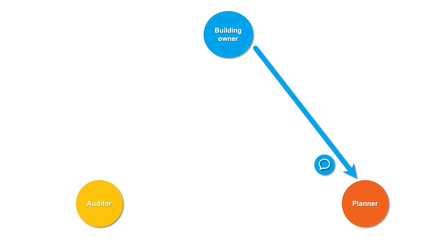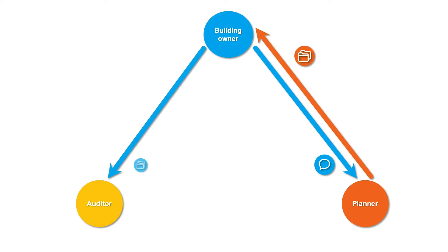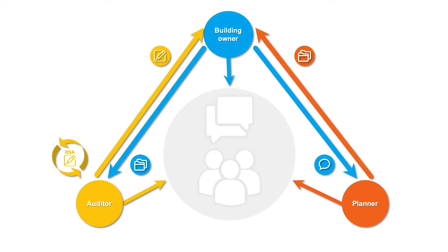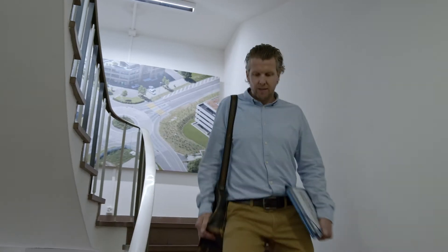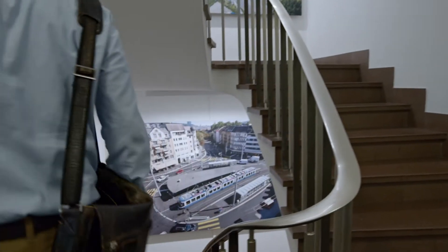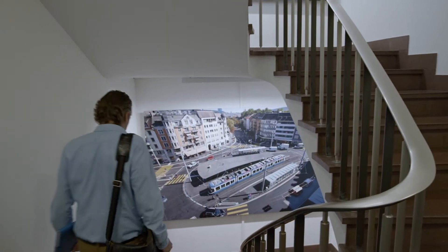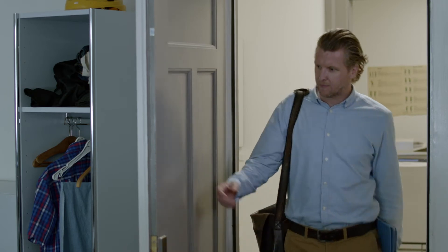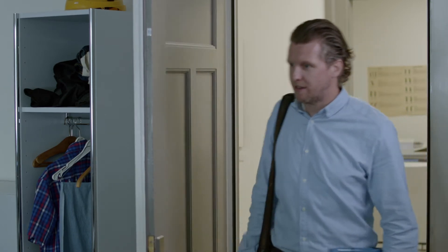There are two types of audit: the early and the classic audit. The early audit is done in the first project phases — in other words, the preliminary study or in the pre-project. The classic audit is done in the construction project phase.